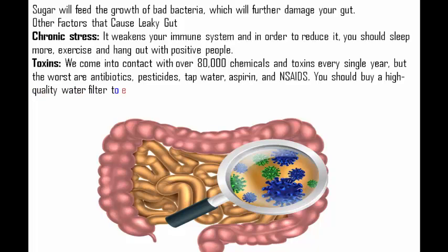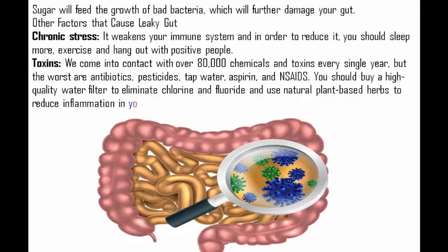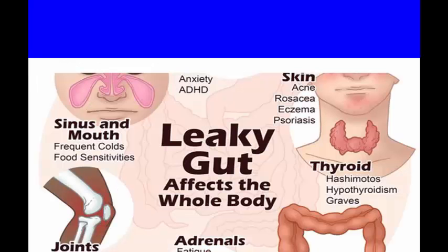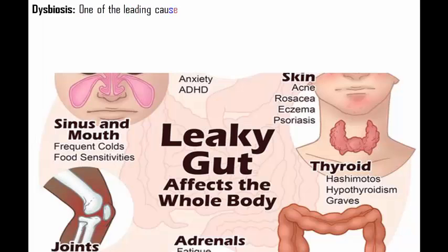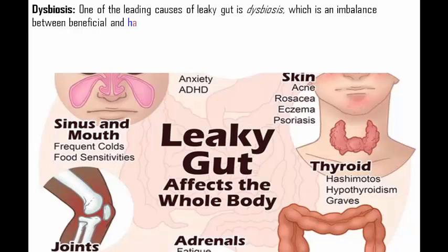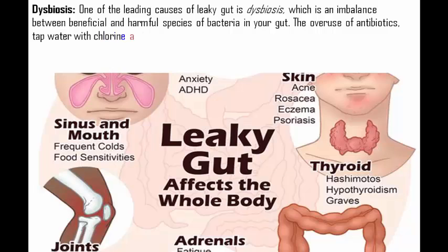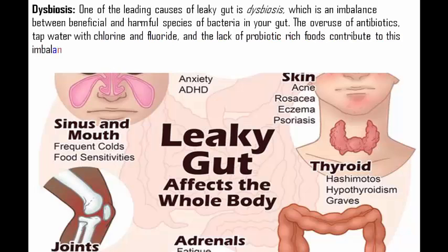The worst toxins are antibiotics, pesticides, tap water, aspirin, and NSAIDs. You should buy a high-quality water filter to eliminate chlorine and fluoride, and use natural plant-based herbs to reduce inflammation. Dysbiosis is one of the leading causes of leaky gut — it is an imbalance between beneficial and harmful bacteria in your gut. The overuse of antibiotics, tap water with chlorine and fluoride, and the lack of probiotic-rich foods all contribute to this imbalance.